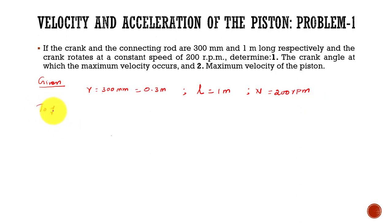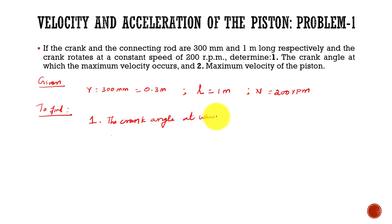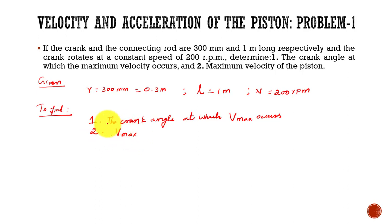What we are going to find: first, the crank angle at which the maximum velocity occurs, and second, the maximum velocity of the piston. By using this crank angle, we can also find out the maximum velocity of the piston. Now we will solve the problem.